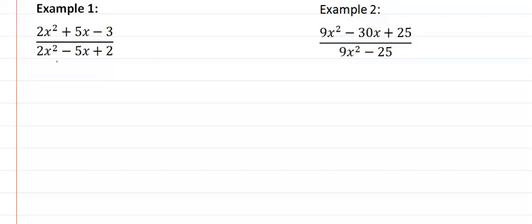So in example one, we need to factor this first, so we'll factor the top first. Let's see, only one way of factoring two, only one way of factoring three, and we're going to be taking the difference. So I'm going to put my three here, and one here, we're going to get six, minus one which should give us five, we want a positive five. So my three needs to be positive, and my one negative.